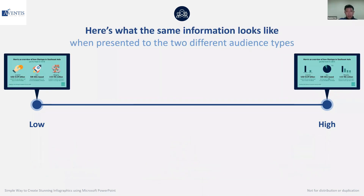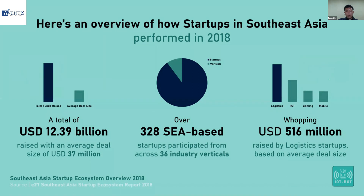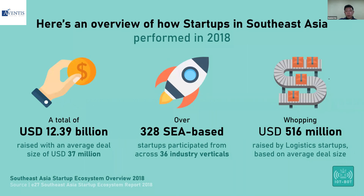As an example, this is a low elaboration likelihood type of slide, whereas this may be something that will appeal more to a high elaboration likelihood audience. High elaboration likelihood audiences want to see facts and figures — they're more focused on data as compared to visuals.